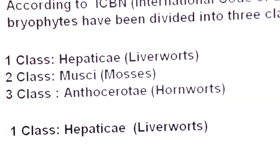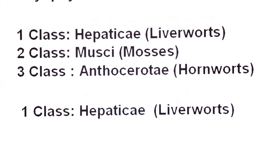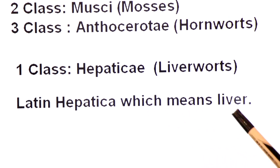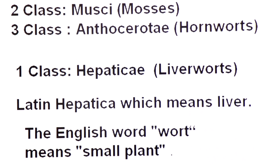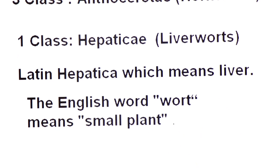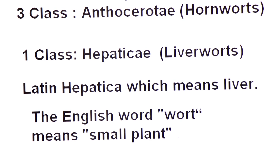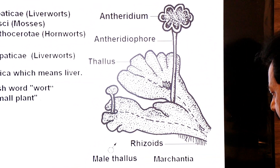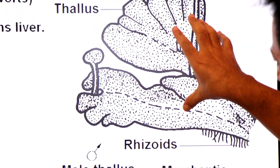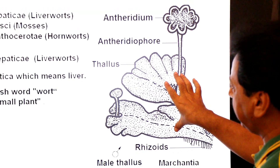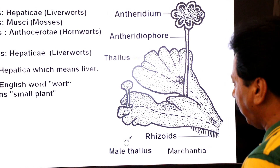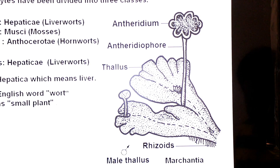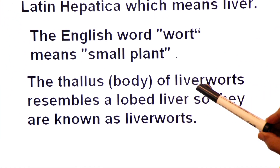Let's start with Class One — Class Hepatici, commonly known as liverworts. The word 'hepatici' comes from the Latin word 'hepatica,' which means liver, and 'wort' is an English word meaning small plants. Looking at the diagram, this liverwort is known as Marchantia, and the shape of this plant looks like the lobed liver of an animal.